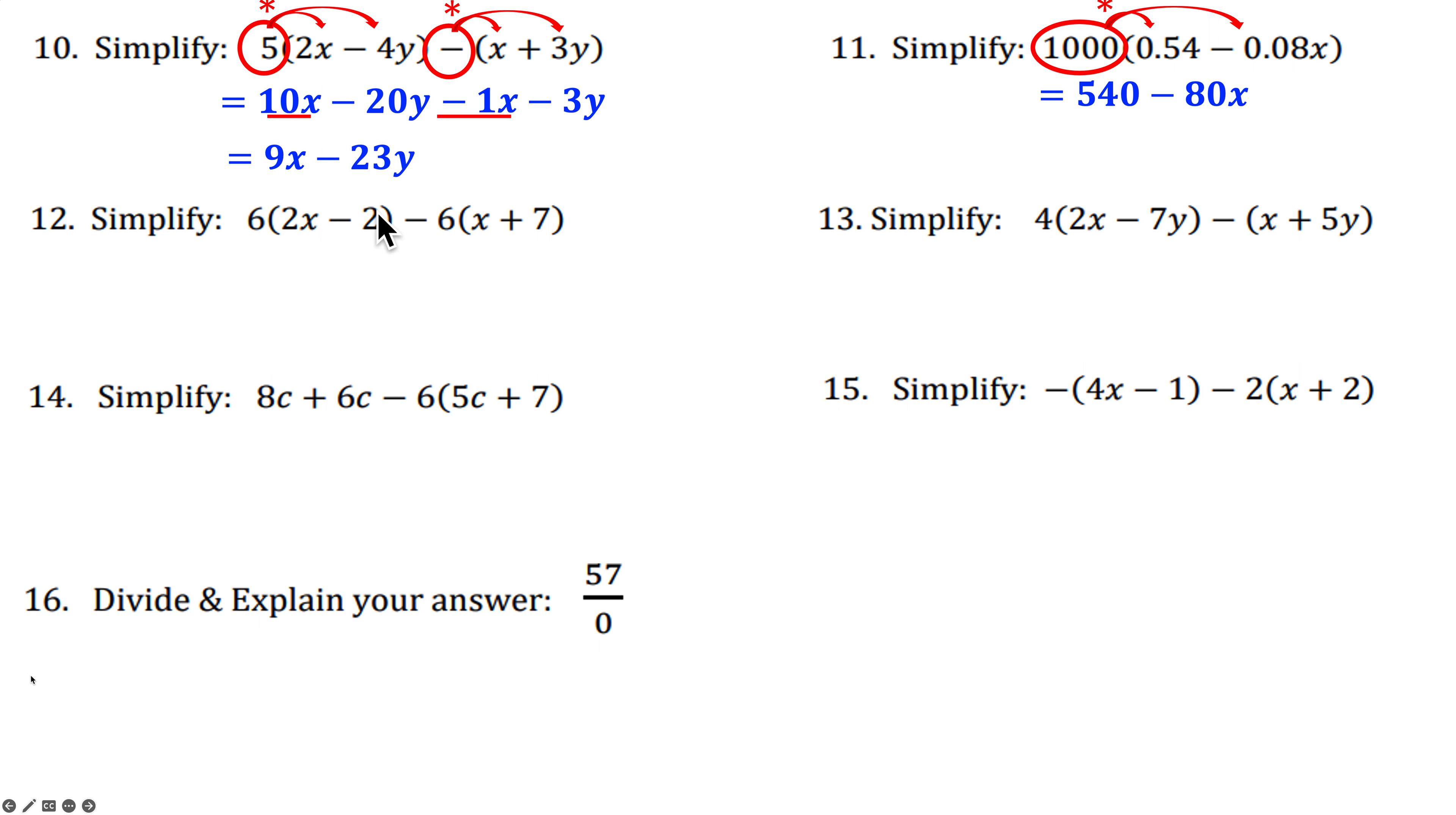Distribute the 6. And now distribute the minus 6. So 6 times 2X minus 2. 12X minus 12. Then take the sign with the 6. Minus 6X minus 42. Combine our like terms. 12X minus 6X is 6X. Minus 12 minus 42. The signs are the same. So it's going to stay minus. Add the numbers. Excuse me, 54. Not 64.